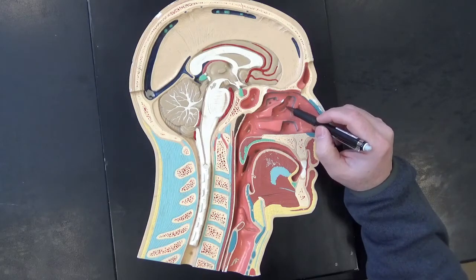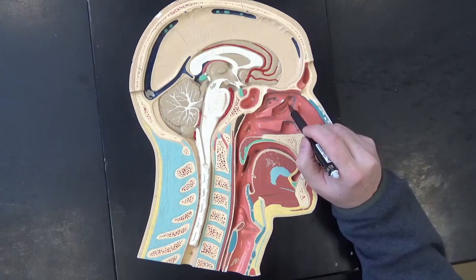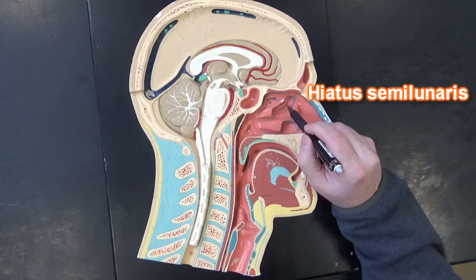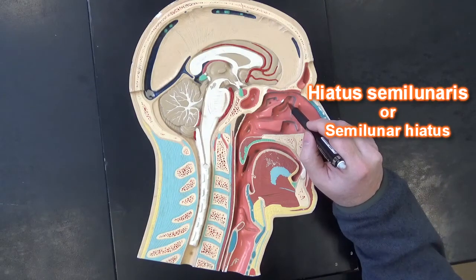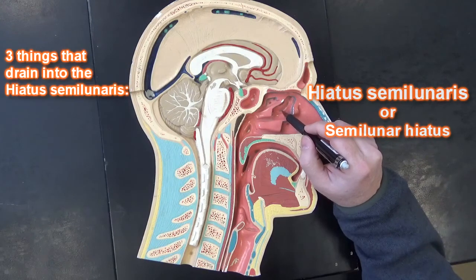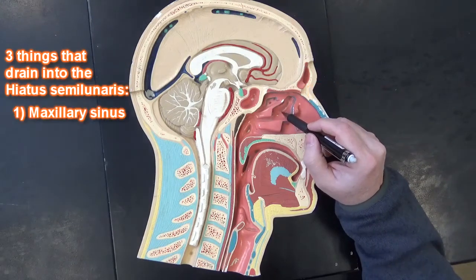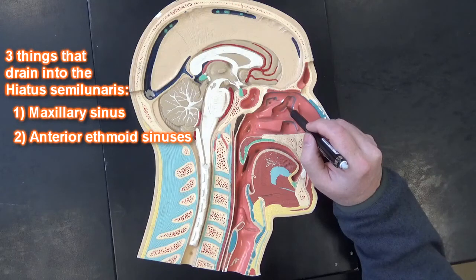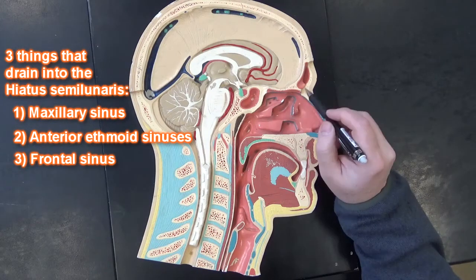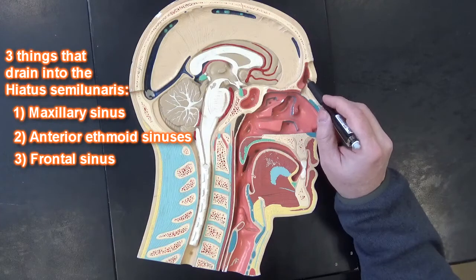This is the hiatus semilunaris, and there's going to be three things that drain into here. One of those things would be the maxillary sinus, another would be the anterior ethmoid sinuses, and then the third thing would be the frontal sinus.